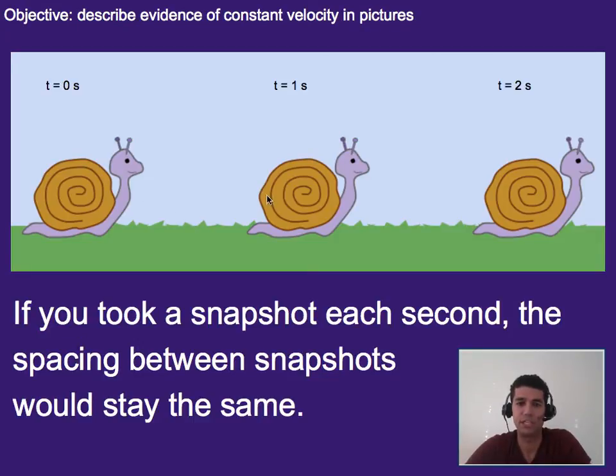If you took a snapshot each second—we've got a snail here going from left to right—and we can see that the spacing in between these snapshots is about the same, that means the snail is going about the same speed the entire time.